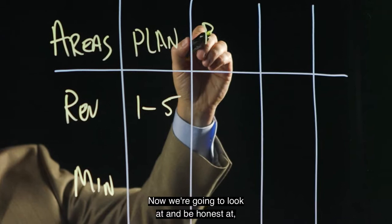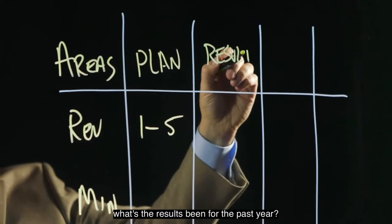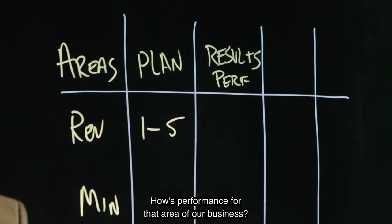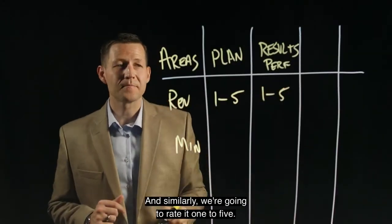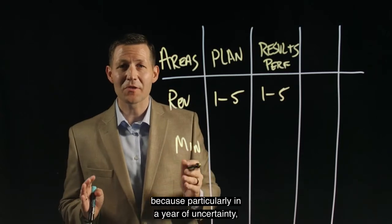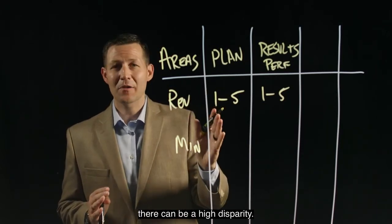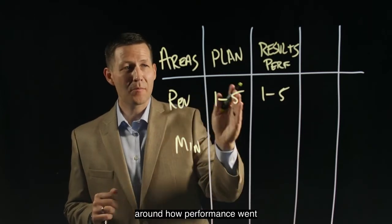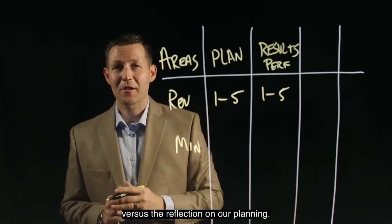Now we're going to look at and be honest: what's the results been of the past year? How's performance for that area of our business? And similarly, we're going to rate it one to five. Now we're rating it separate from planning because, particularly in a year of uncertainty, there can be a high disparity. There can be false positives and false negatives around how performance went versus the reflection on our planning.